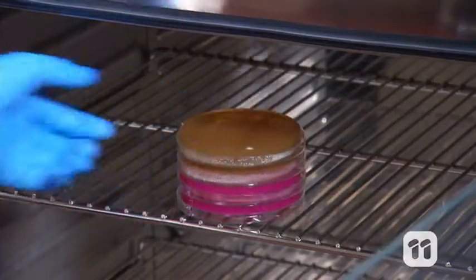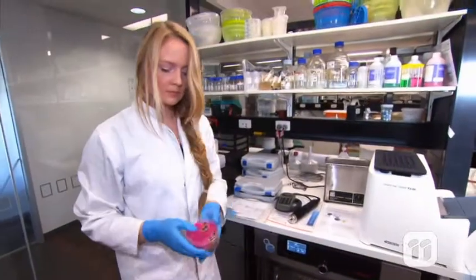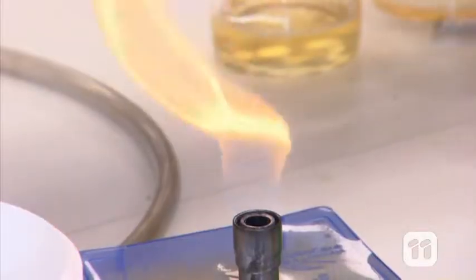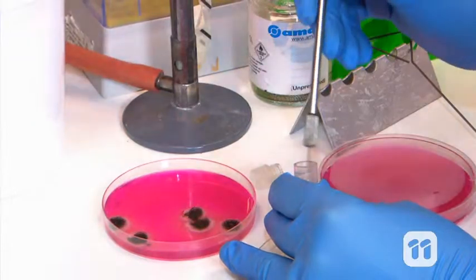After an hour or so, we put the plates into this machine called an incubator, which heated the plates to 25 degrees, so that they had the perfect conditions to grow. Then we transferred a small subculture of each type of fungi onto another plate to isolate them.